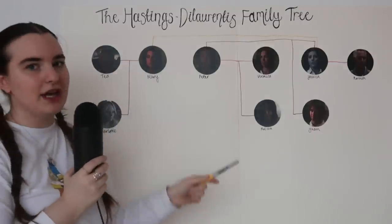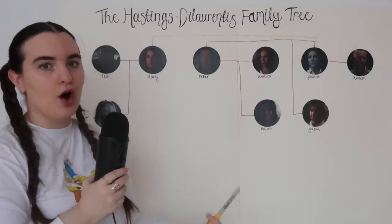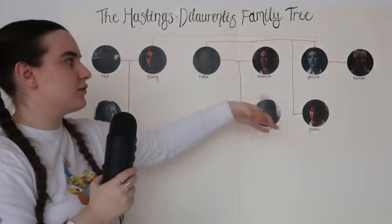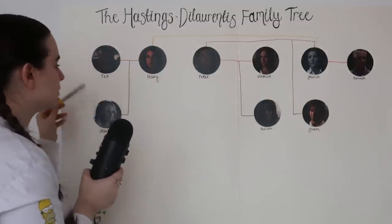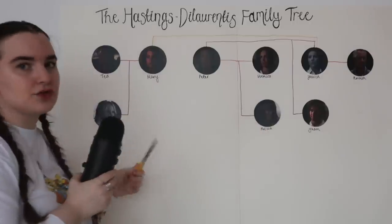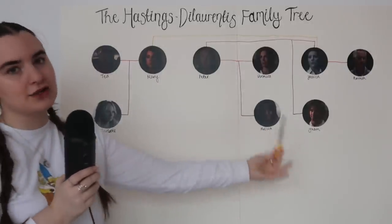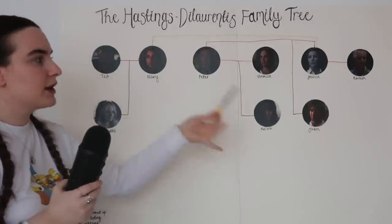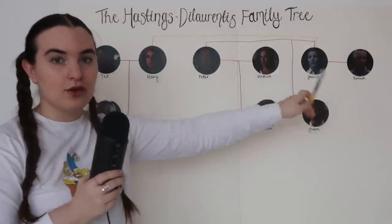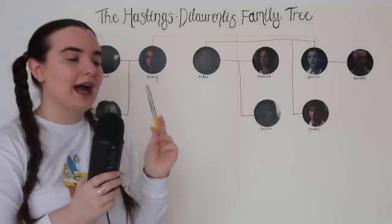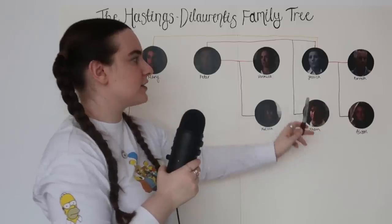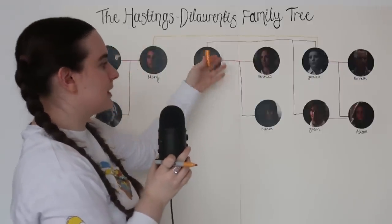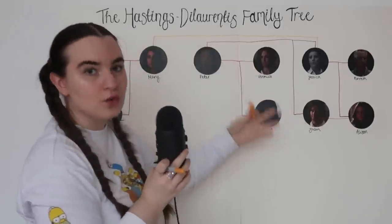So here with Charlotte, Melissa, and Jason, we have our initial generation of this family. At the top we've got our top generation — Ted, Mary, Peter, Veronica, Jessica, Kenneth — the parents. Now we're getting on to our first kind of generation of children, the older siblings: Charlotte, Melissa, and Jason. Then moving on to the younger siblings: Jessica and Kenneth have their only biological child together, and that is Alison De Laurentiis. That makes Alison half siblings with Jason. And obviously Peter being both Jason and Melissa's dad also makes them half siblings.